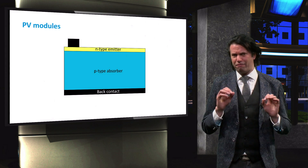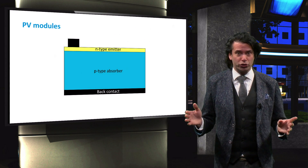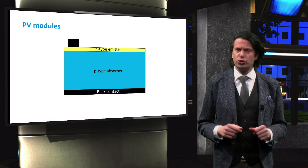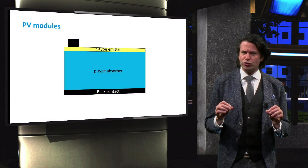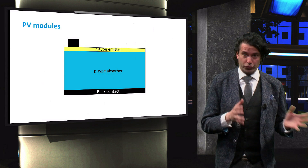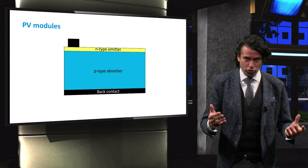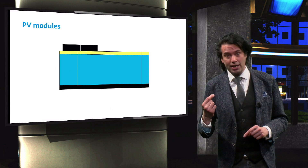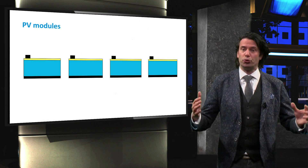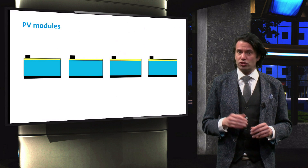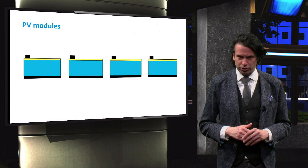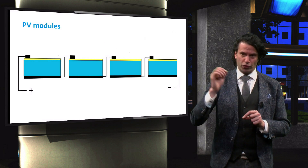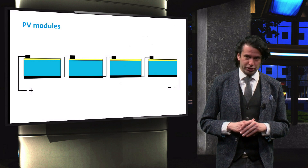Making thin film modules is very different from making modules from wafer-based crystalline silicon solar cells. The fabrication of modules with crystalline silicon technology involves two distinct steps. In the first step, crystalline silicon solar cells are produced. In the second step, the cells are used to create a module by connecting several wafer-based solar cells, where the back contact of one cell is connected to the front contact of the next to create a series connection.